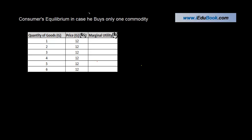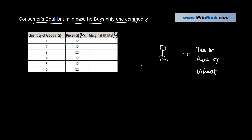Consumer equilibrium in the case where a consumer buys only one commodity — let's say tea, rice, or wheat. When can this consumer be said to be in equilibrium? We saw earlier that according to the assumptions of the utility approach, marginal utility can be cardinally measured or measured in terms of money.